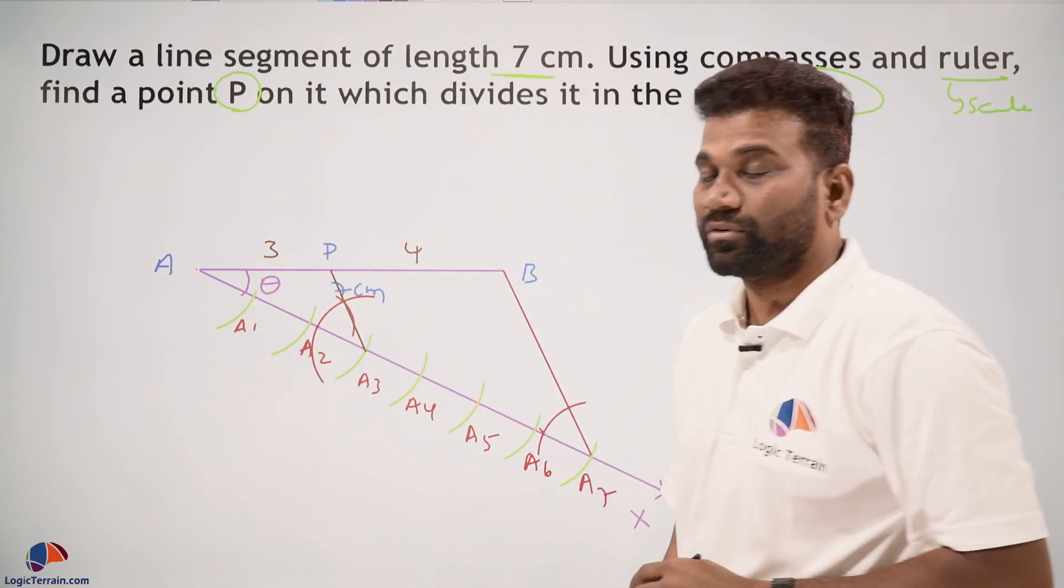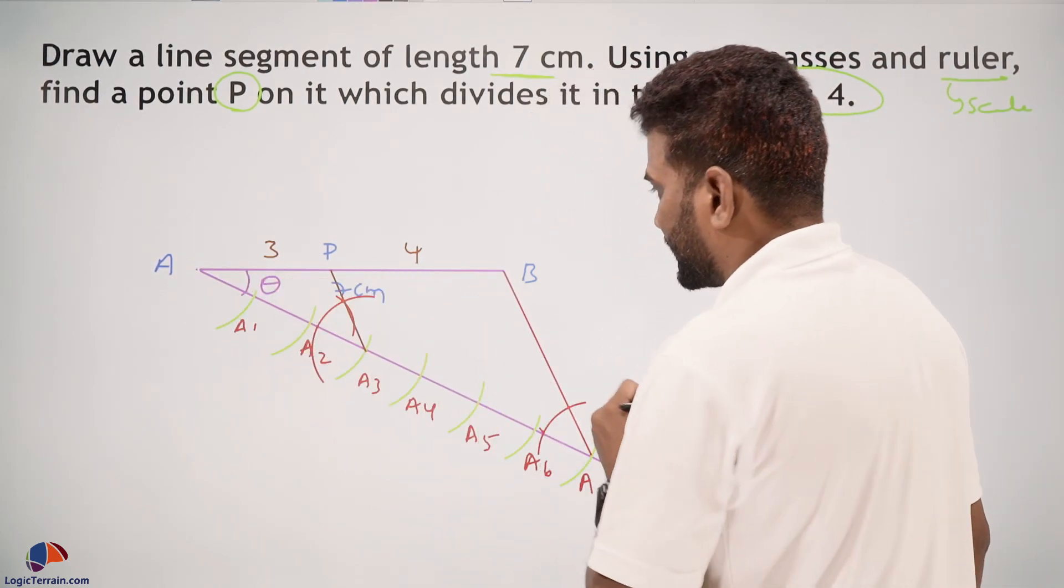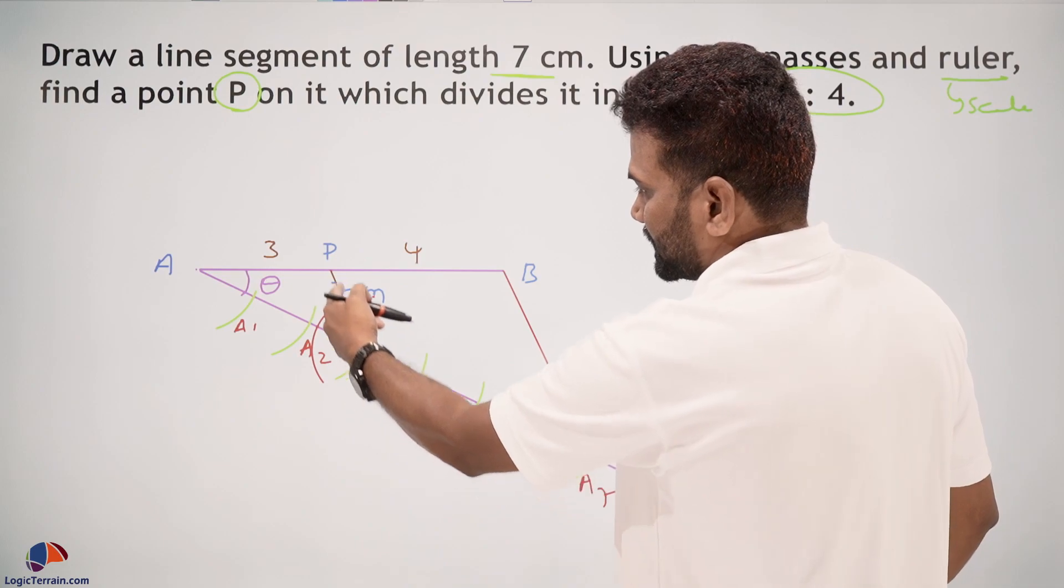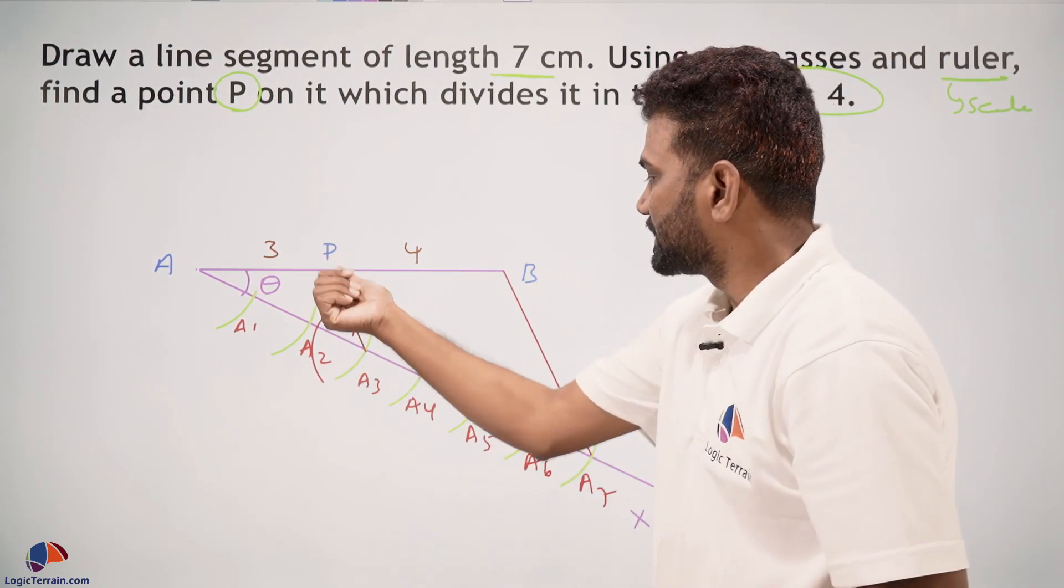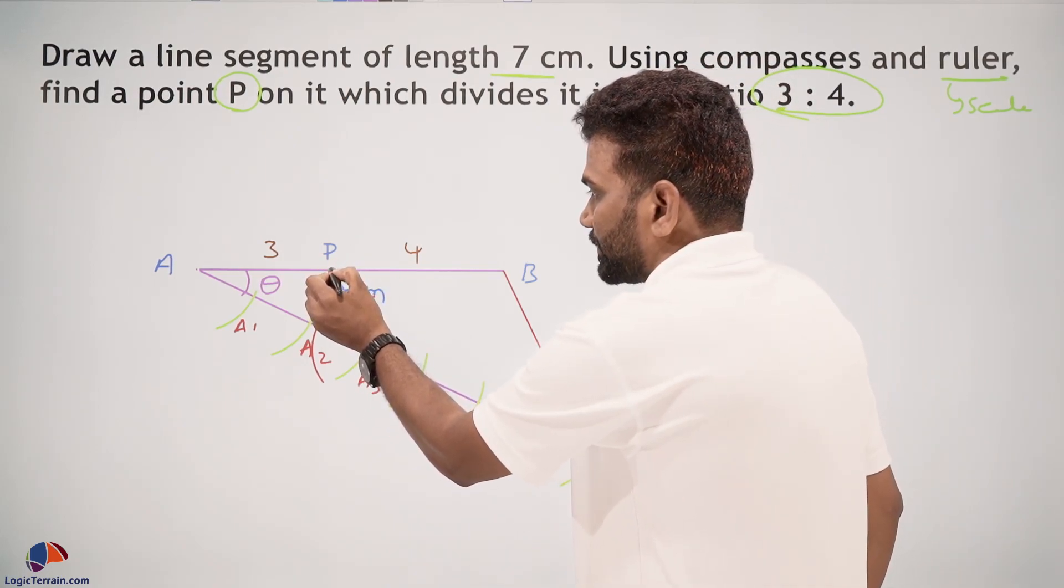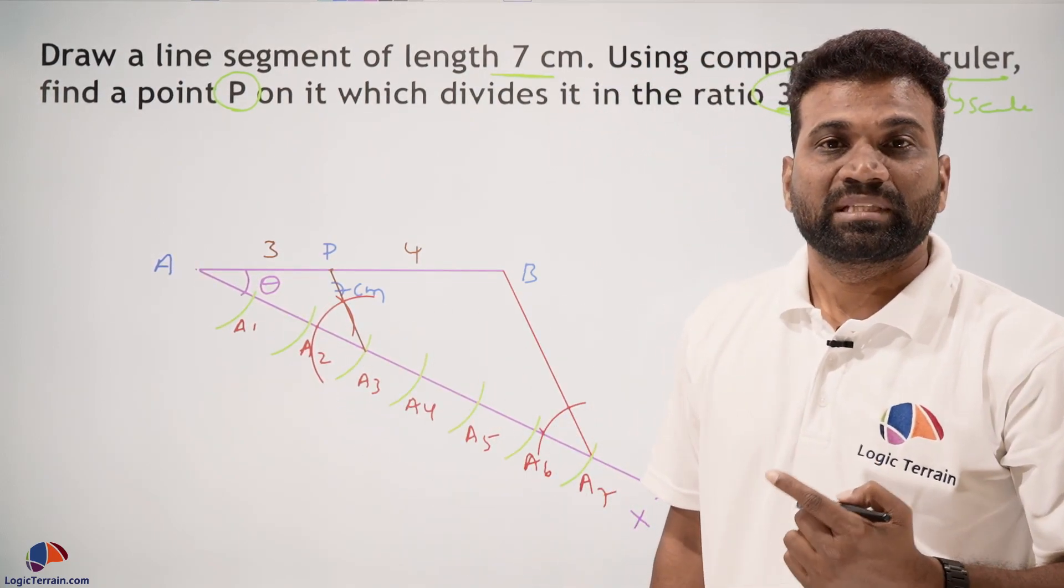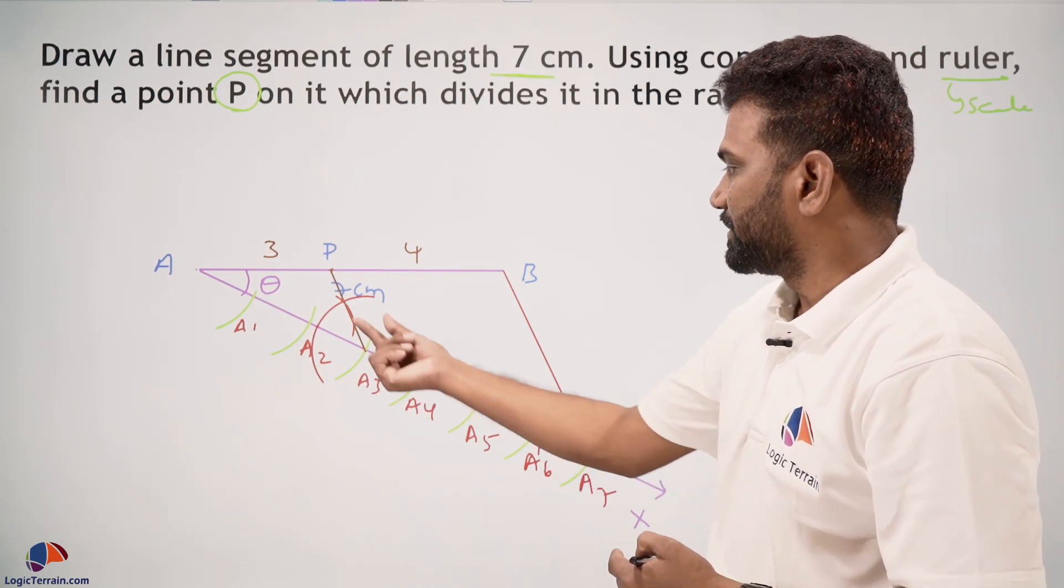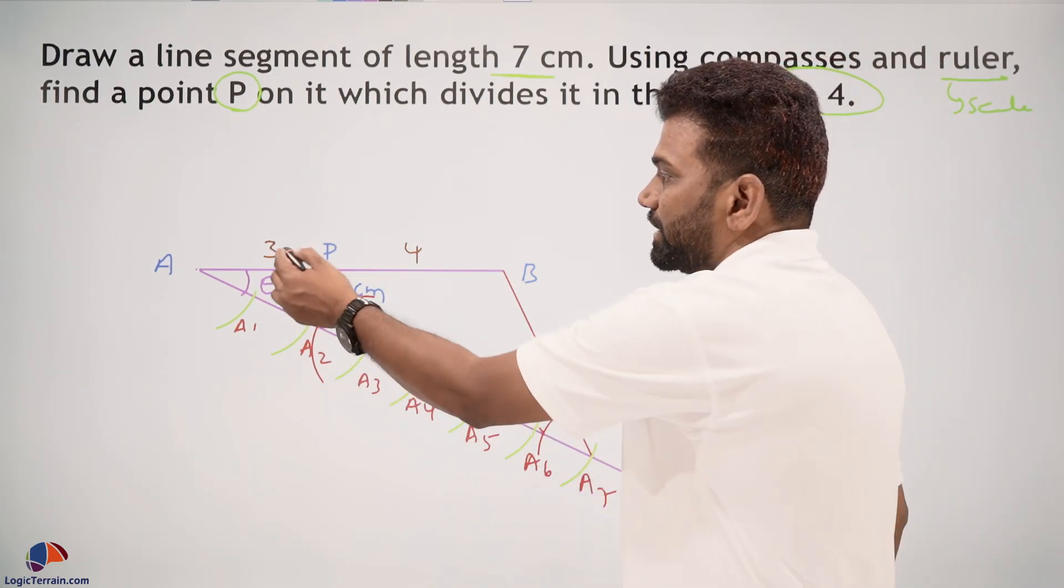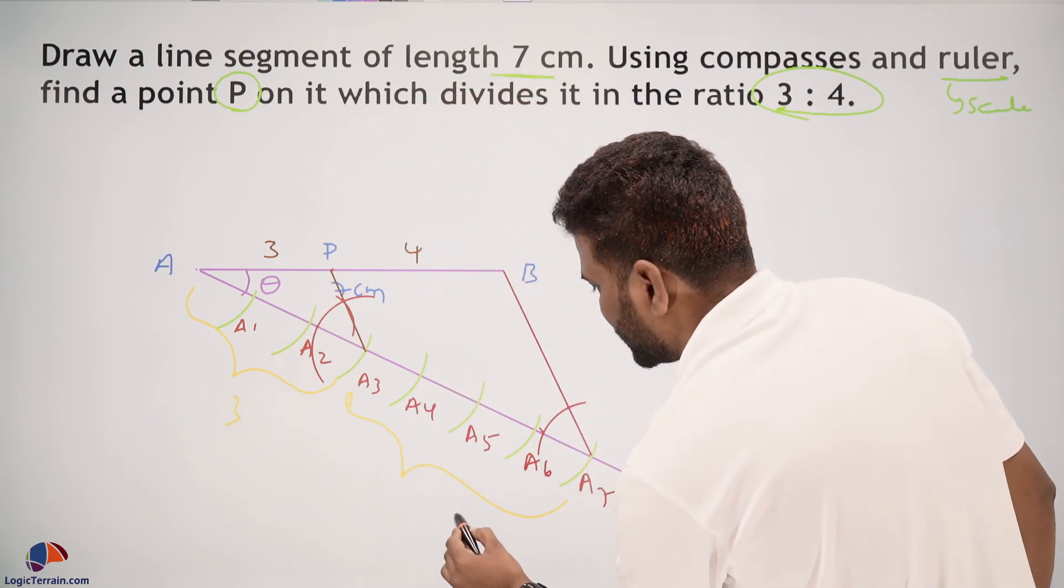Consider triangle ABA7. You can assume AA7 as the base, and PA3 is a line segment parallel to this base. This line segment PA3 divides the other two sides AB at P and AA7 at A3. By using the basic proportionality theorem, if a line is drawn parallel to the third side of a triangle, then that line divides the other two sides in equal ratios. From here to here are three parts, from here to here are four equal parts. So this is 3:4.